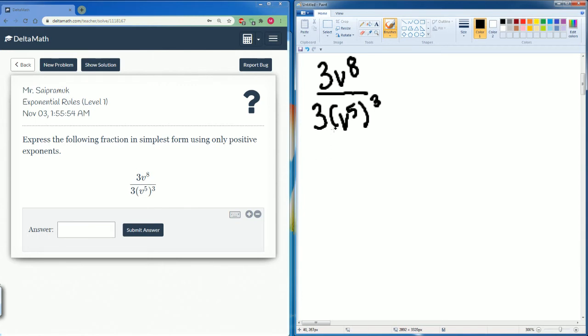Alright so I'm going to already split this so I have the number is 3 divided by 3 and I'm going to have the variables on the other side. v to the eighth divided by v to the fifth to the third. We already know 3 over 3 just becomes 1.